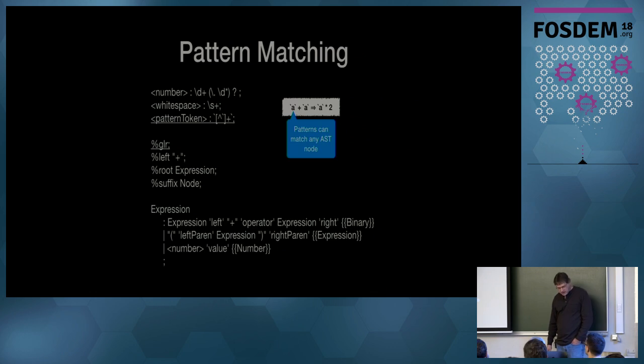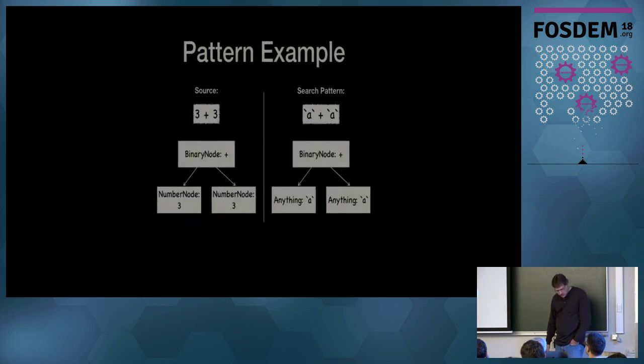So using that, we can write then expressions like the one you see there where you have a plus a, or the pattern variable a plus the pattern variable a is going to be rewritten by whatever the pattern variable was, a times two. And basically that pattern variable can match any AST node. So it can match a single number, it can match a binary expression.